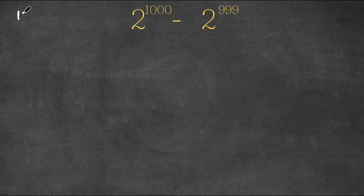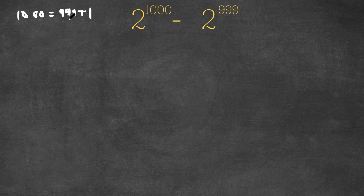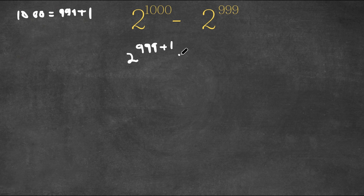Now, 1000 is equal to 999 plus 1. So now I'm going to substitute in 999 plus 1 for 1000. So now we have 2 to the power of 999 plus 1, minus 2 to the power of 999.